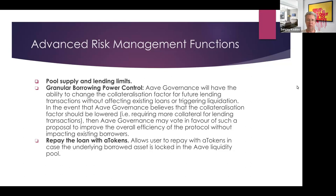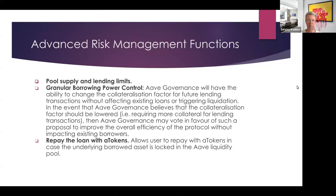For example, if governance changes the collateralization ratio from 75% to 65%, and you had a position at 70% — which is above the new limit but below the old one — in Aave V2 you would fall into liquidation. But in Aave V3, existing positions will not be liquidated; the new requirement only applies to new supply and borrowing positions, not old ones.